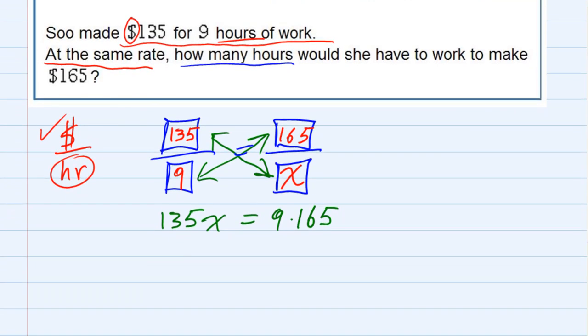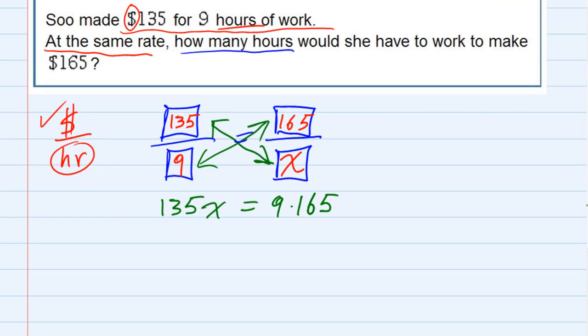So we're given now an equation that we can solve for X. The first thing I need to do is figure out 165 times 9. If I multiply that out, that would be 45, and 54 plus the 4 would be 58. 9 plus the 5 would be 14. So 135X equals 1485.